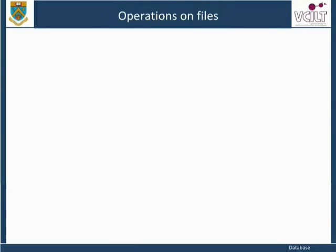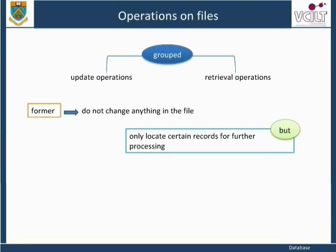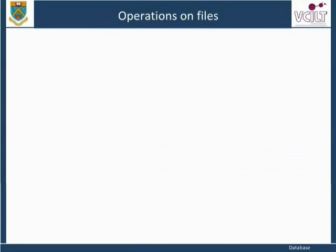Operations on files can usually be grouped into retrieval operations and update operations. Retrieval operations do not change anything in the file but only locate certain records for further processing. Update operations change the file by inserting, deleting, or modifying some records. Typically, a DBMS can issue a request to carry out these operations with the assistance from file or disk managers.